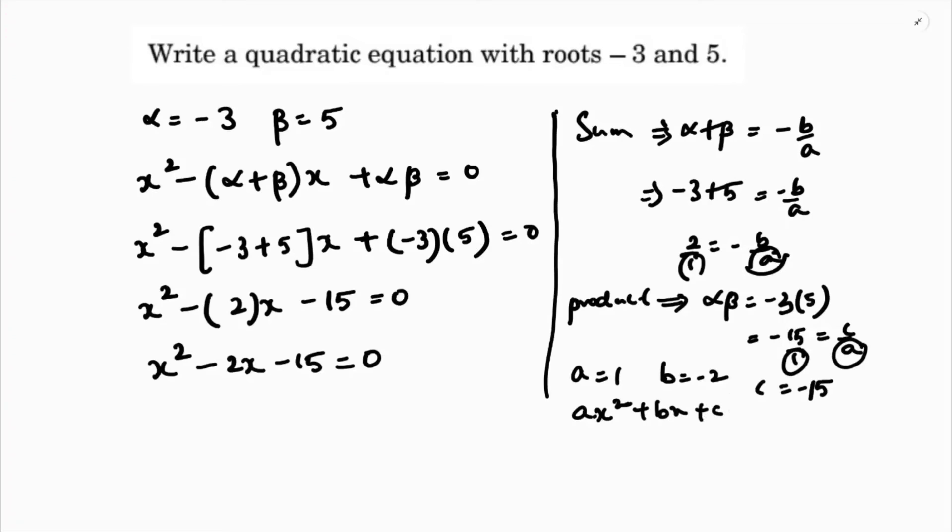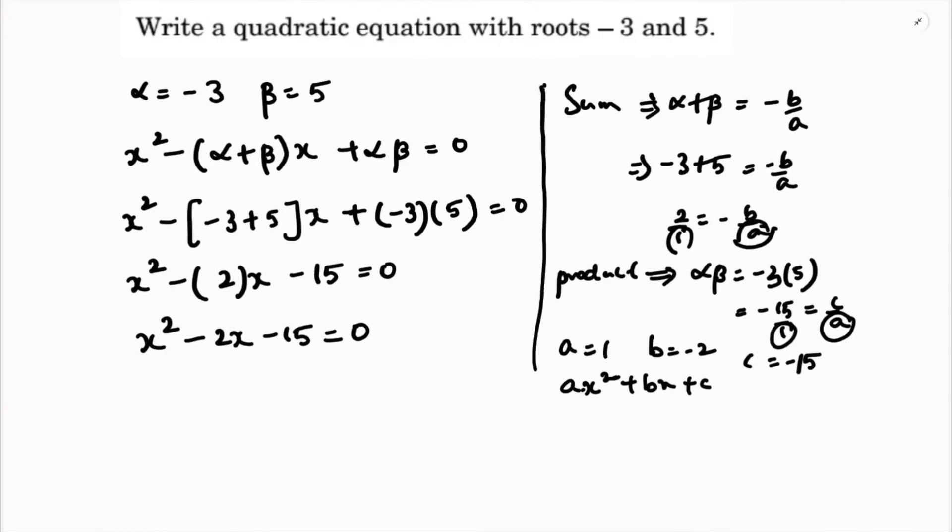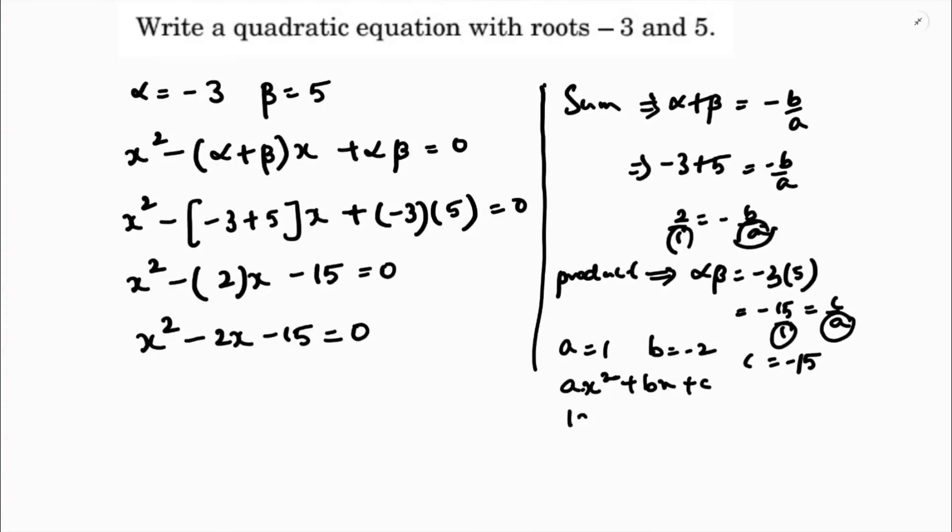ax square plus bx plus c. So here a is 1, x square minus 2x minus 15. So the required quadratic equation is 1x square minus 2x minus 15 equals 0.